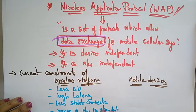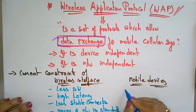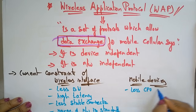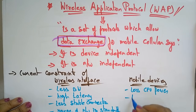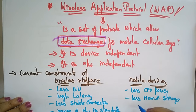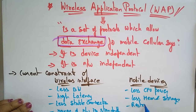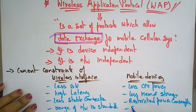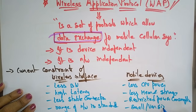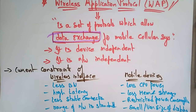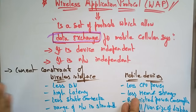For mobile devices, the current constraints are: less CPU power, less memory and storage, restricted power consumption, and a small or variable size of display. These are the current constraints of any device — whether it's a wireless interface or a mobile device.